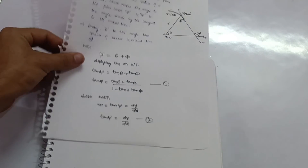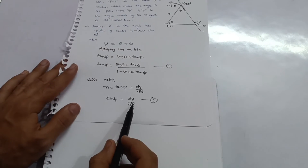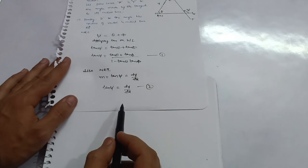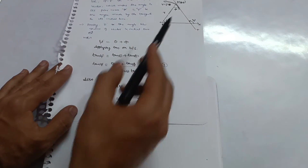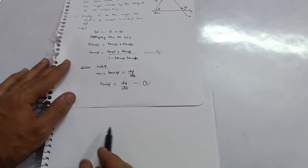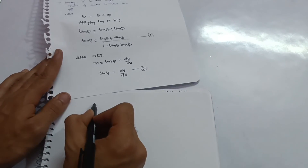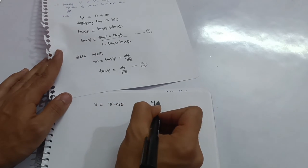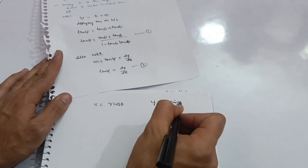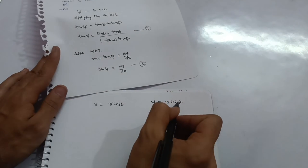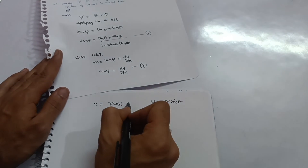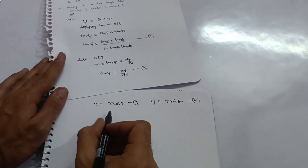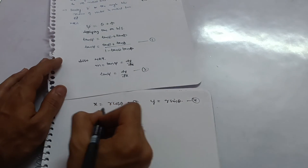Since we are dealing with a polar curve, we don't have Cartesian coordinates directly. So we make the assumptions: x = r cos θ (third equation) and y = r sin θ (fourth equation). Now differentiate both equations with respect to θ.